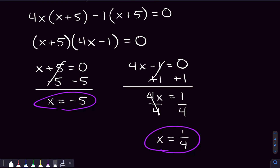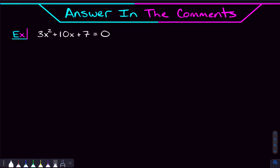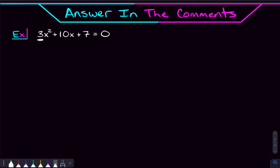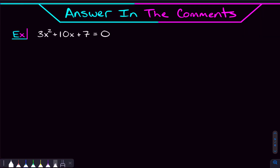Assuming you're feeling comfortable now with solving quadratic equations by factoring, here's a problem to try in the comments: 3x squared plus 10x plus 7 equals zero. It's a trinomial, so first ask if the x squared is by itself — it's not. Then ask: can you factor out the 3 from the whole quadratic? If you can, factor normally. If you can't, use factoring by grouping. Try that and let me know your answer in the comments, and ask any questions about factoring by grouping too.